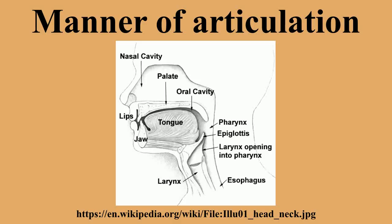Implosives, which are glottalic ingressive: here the glottis moves downward, but the lungs may be used simultaneously, and in some languages no air may actually flow into the mouth. Implosive stops are not uncommon, but implosive affricates and fricatives are rare. Voiceless implosives are also rare. Clicks, which are lingual ingressive: here the back of the tongue is used to create a vacuum in the mouth, causing air to rush in when the forward occlusion is released. Clicks may be oral or nasal, stop or affricate, central or lateral, voiced to voiceless. They are extremely rare in normal words outside southern Africa.